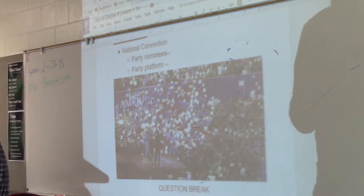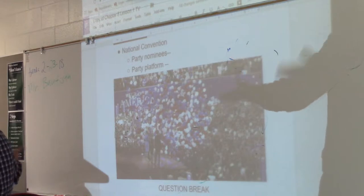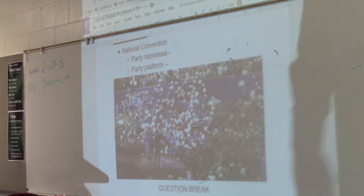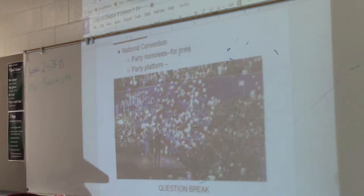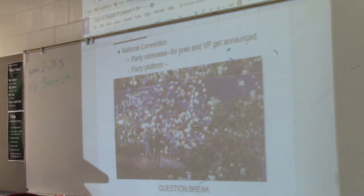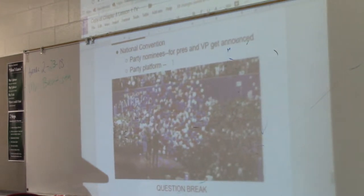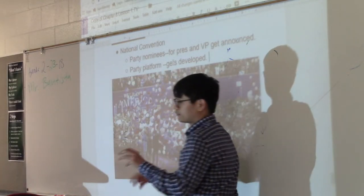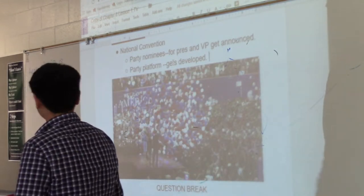The most important thing announced during a convention is who won the party nomination — the party nominees for president and vice president get announced. Also, the party platform gets developed at the national convention. We talked about the party platform — the goals and values of the party. They don't usually change it dramatically every four years, but they tweak it. Essentially it's a pep rally: celebrity guests come in, singers perform, balloons drop.